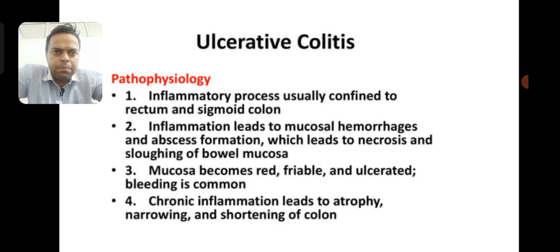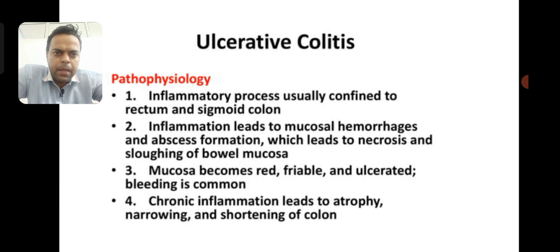Regarding pathophysiology, ulcerative colitis is usually confined to the rectum and sigmoid colon. Inflammation leads to mucosal hemorrhage and abscess formation, which leads to necrosis and sloughing of the bowel mucosa. The mucosa becomes red, friable, and ulcerative, and bleeding is common. Chronic inflammation leads to atrophy, narrowing, and shortening of the colon.